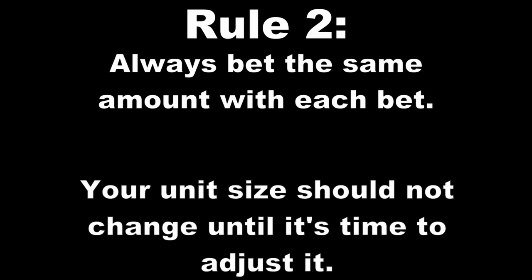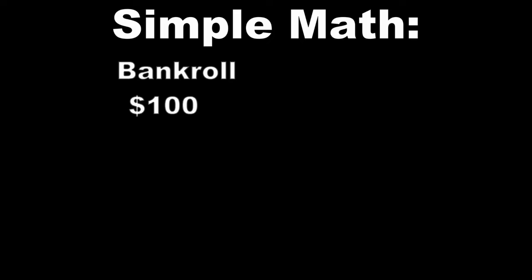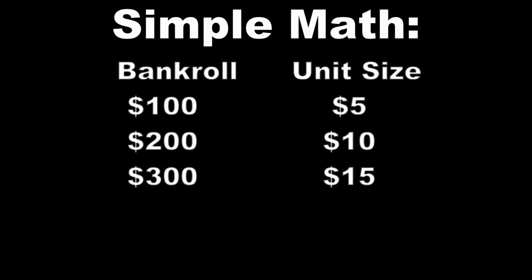Your unit size shouldn't change until it's time to adjust it according to your new bankroll amount. One of the reasons I like to use 5% as my unit size is to simplify the math. If I had $100, then my unit size would be 5% of 100, which is $5. Now that we have these two numbers, we can simply start adding $5 to our unit size for every $100 we gain in our bankroll. If 5% of 100 is 5, then 5% of 200 is 10. 300 would be 15, 400 is 20, and 500 is 25.